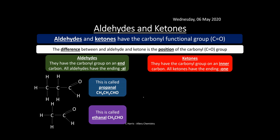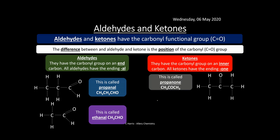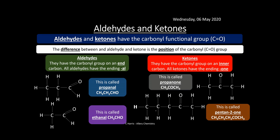Ketones have their carbonyl group on an inner carbon and they all end in -one. For example, this one is called propanone and this one is called pentan-2-one. With ketones you have to name them properly — you can see this ketone is on the second carbon, so it's pentan-2-one, with five carbons, hence the prefix pent-. Make sure you're familiar with how they look and their naming.